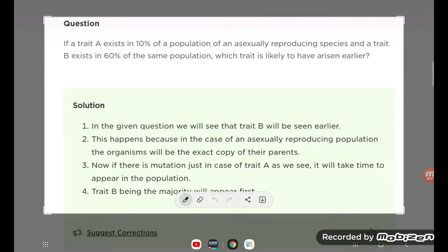Hello students, let's try to understand one problem. If trait A exists in 10% of a population of an asexually reproducing species and trait B exists in 60%,